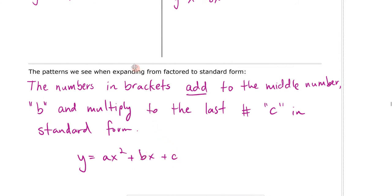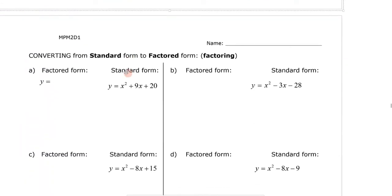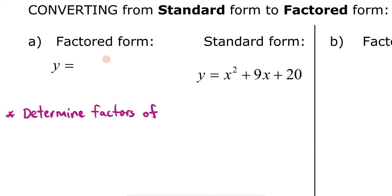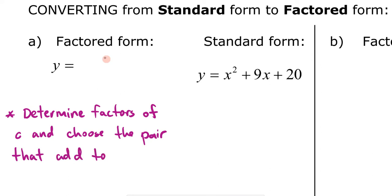We're going to use that pattern to go in the reverse direction — to convert from standard form back to factored form. So how do we go from standard form to factored form? The method is: determine factors of C, then choose the pair that adds to B, and put those numbers in brackets.